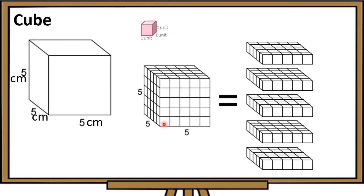Let us look at the first layer and count the cubes: 1, 2, 3, 4, 5 in front, and 1, 2, 3, 4, 5 at the back. It means sa bawat layer, merong 25 cubes. Let us verify — counting all cubes in one layer gives us 25.